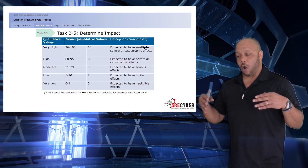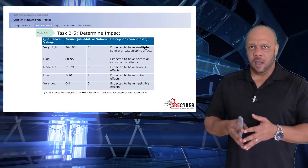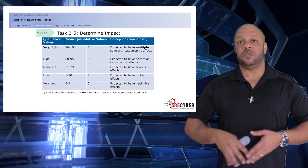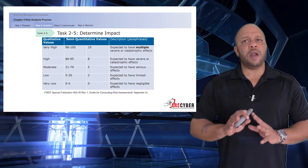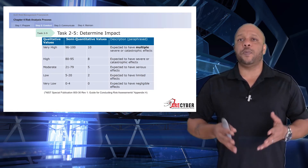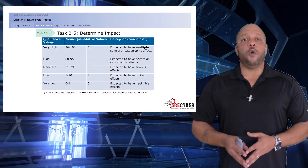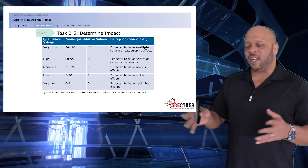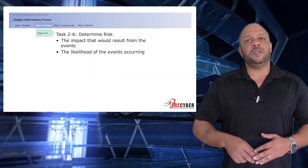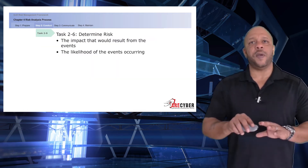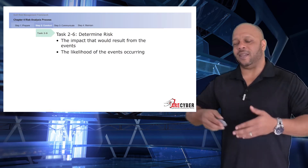When it comes to determining overall impact, this is where quantifying meets qualifying — we call it semi-qualitative values, also found in NIST 830. For very high events expected to have multiple severe or catastrophic effects, we would score this as a 10. For very low events expected to have negligible effects, we would score this as a 0, and so forth. When determining risk, we look at the impact that would result from the event and the likelihood of the event itself occurring.